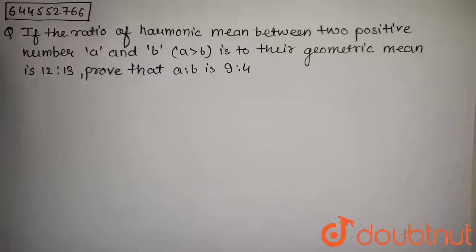The question is if the ratio of harmonic mean between two positive numbers A and B, A greater than B, is to their geometric mean is 12 is to 13. Prove that A is to B is 9 is to 4.